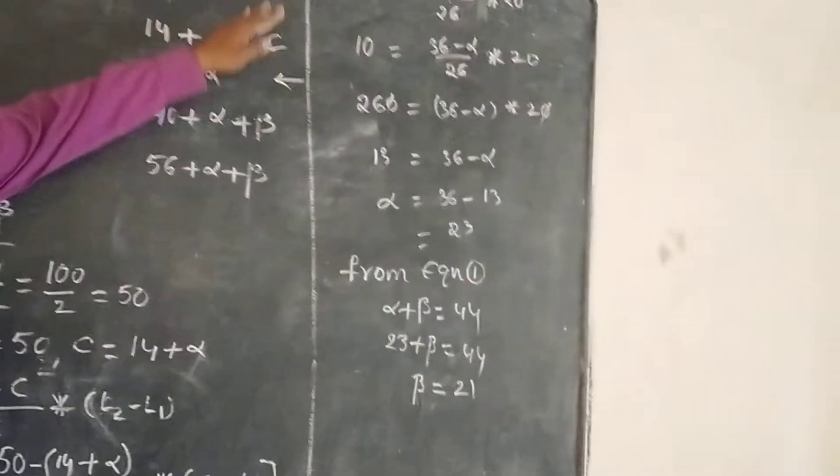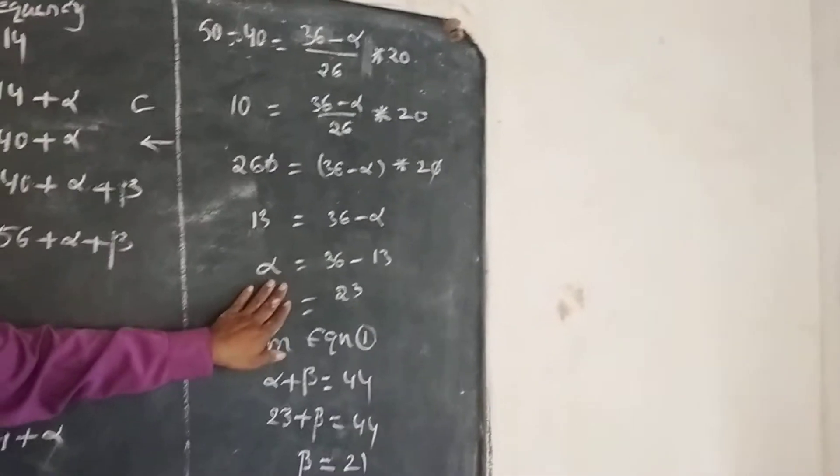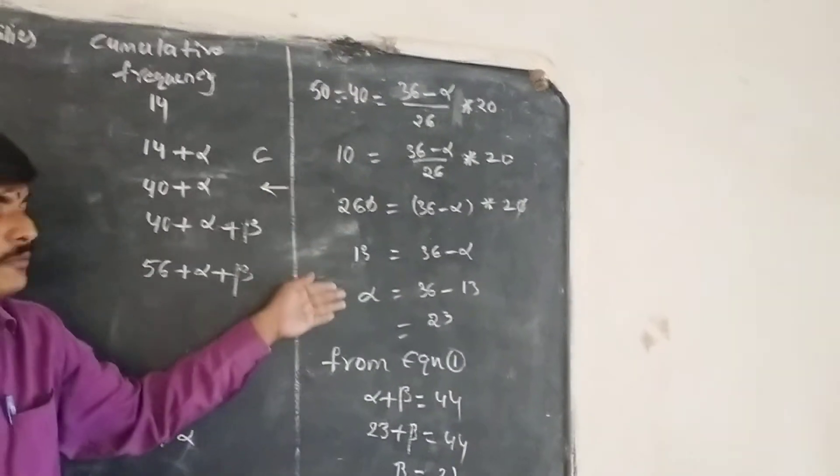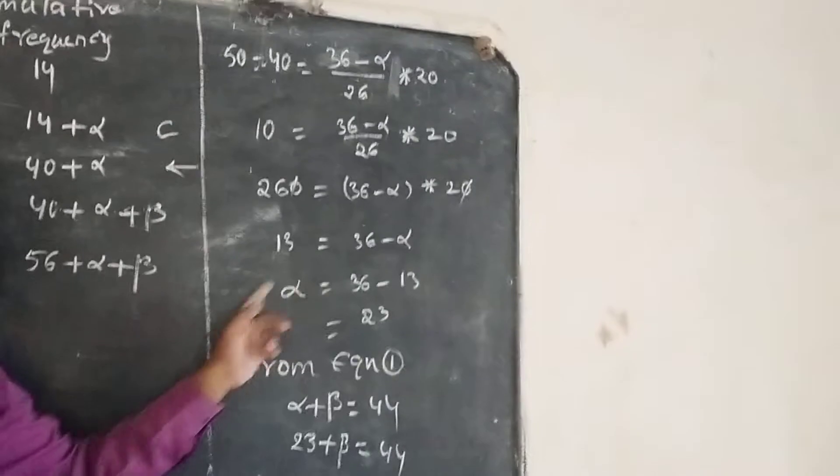We are getting the value alpha equals 23. See these calculations for confirmation. So alpha value is 23.